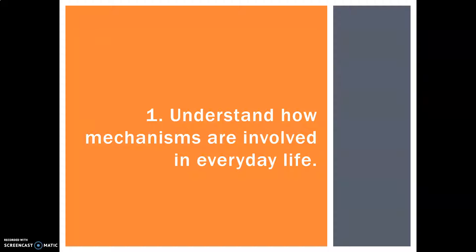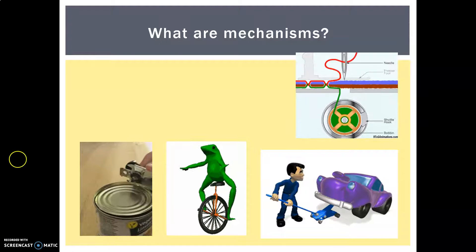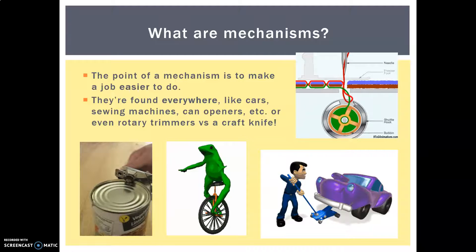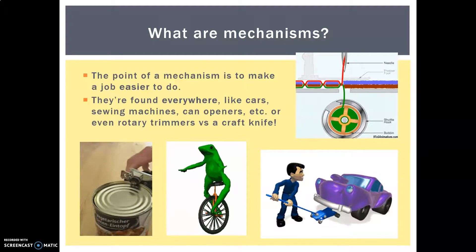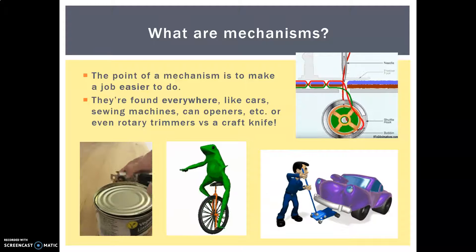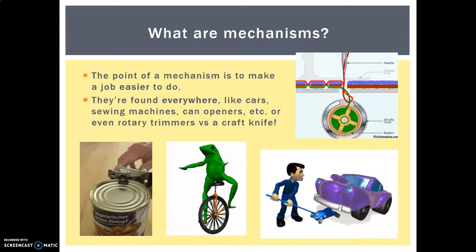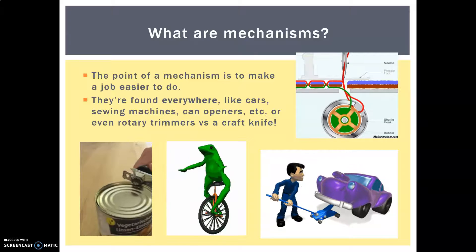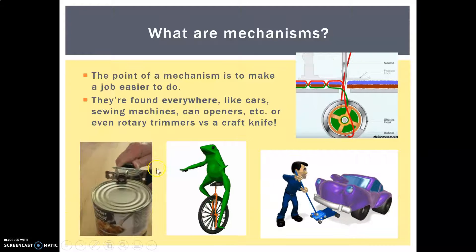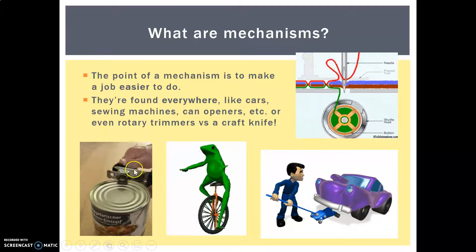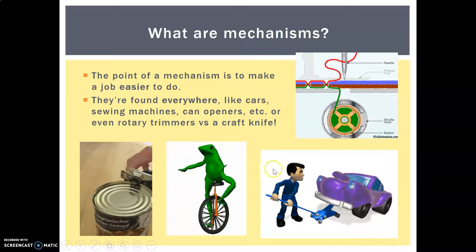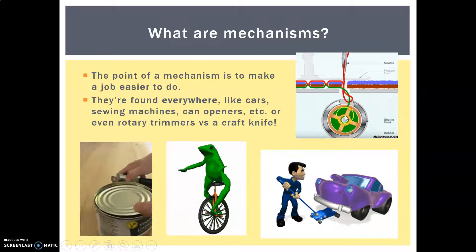Let's take a look at mechanisms in everyday life. What are mechanisms? The point of a mechanism is to make a job easier to do. We find them everywhere — like your car, sewing machines, can openers, even rotary trimmers at school instead of having to use a craft knife. A can opener is obviously incredibly helpful with mechanisms going on inside. We also have wheels, a car jack, and this is the side of a sewing machine.